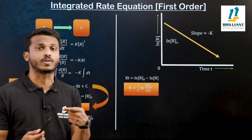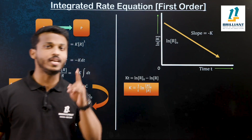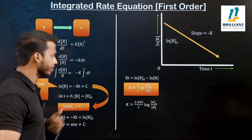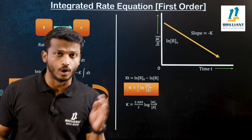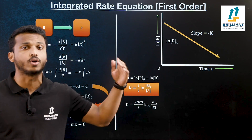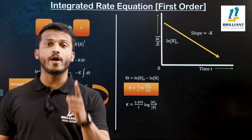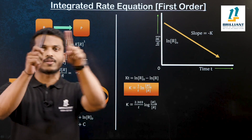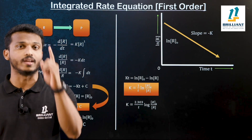This is in natural log (ln). Normally we use log base 10, so let me convert ln into log by multiplying by 2.303. The equation becomes: K is equal to 2.303 divided by t into log of R₀ divided by R. This is our final equation for the rate constant K for a first order reaction.